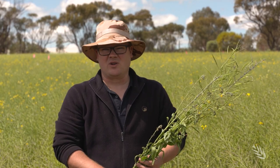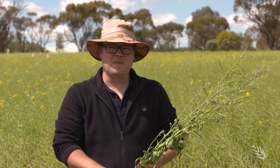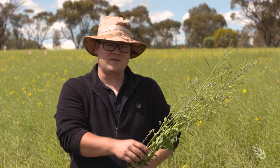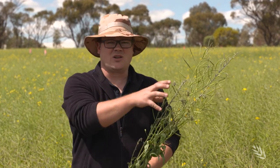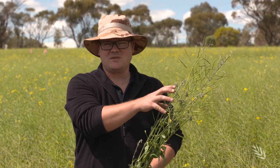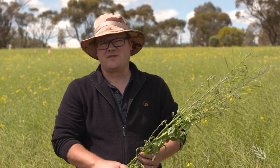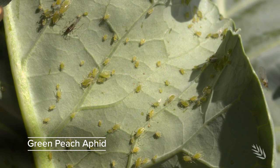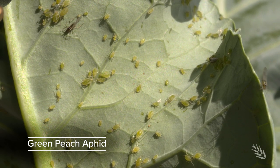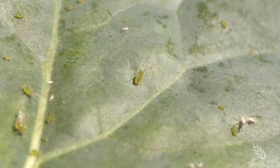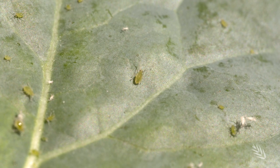There are three species of aphids that we have to worry about in canola in Australia: the cabbage aphid, the turnip aphid — they generally tend to cluster on the racemes — and we also have the green peach aphid. It's more of a pest early in the season and more renowned for vectoring viruses, but when crops are stressed they can certainly affect advanced crops.